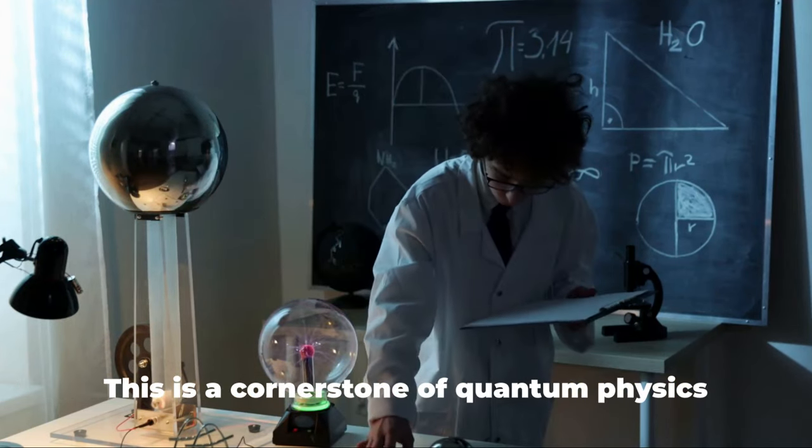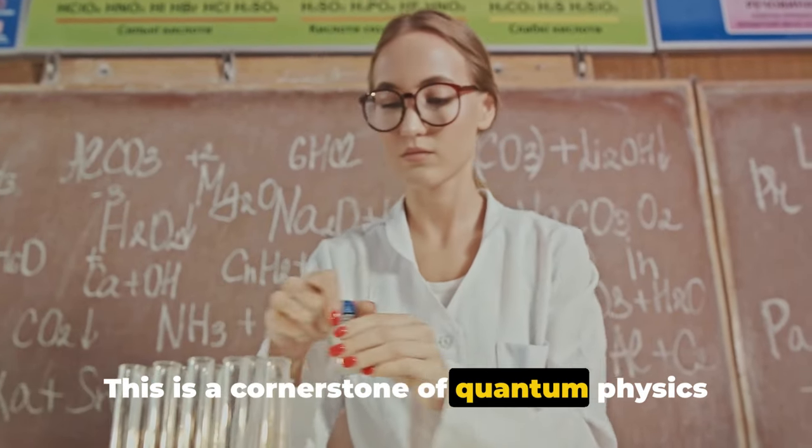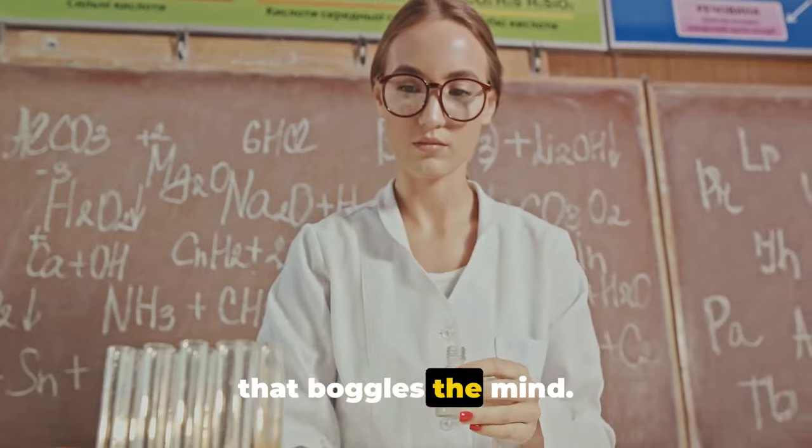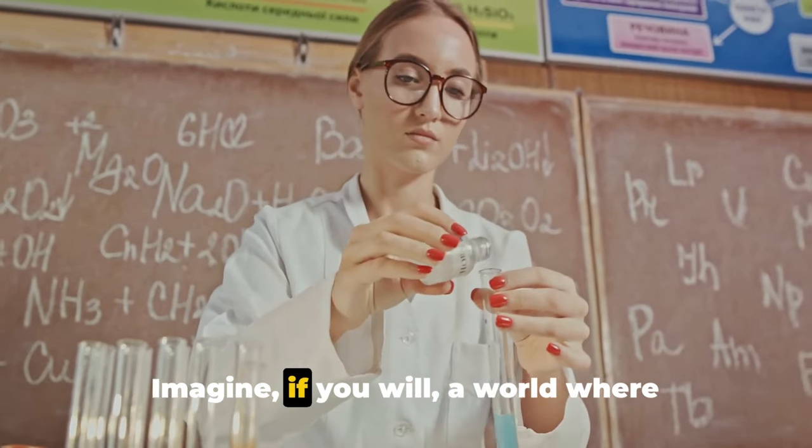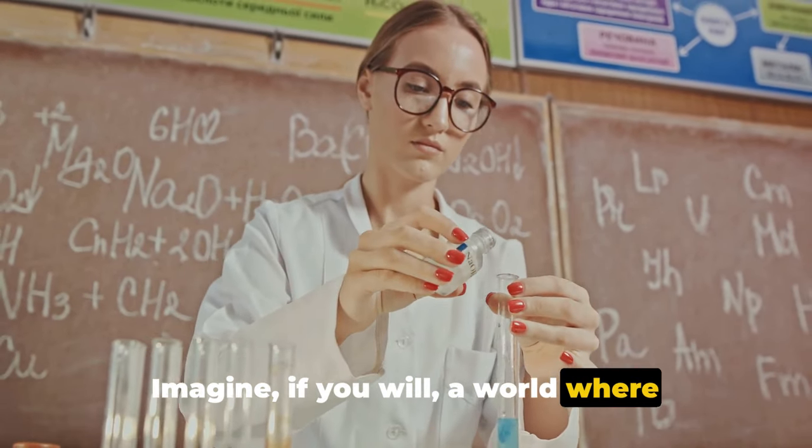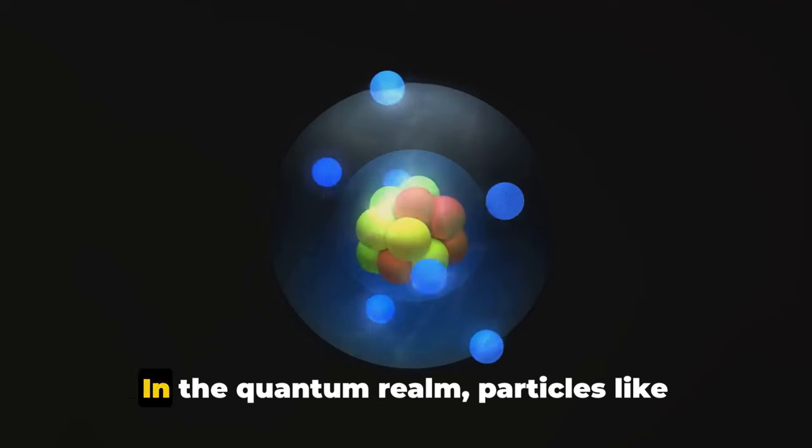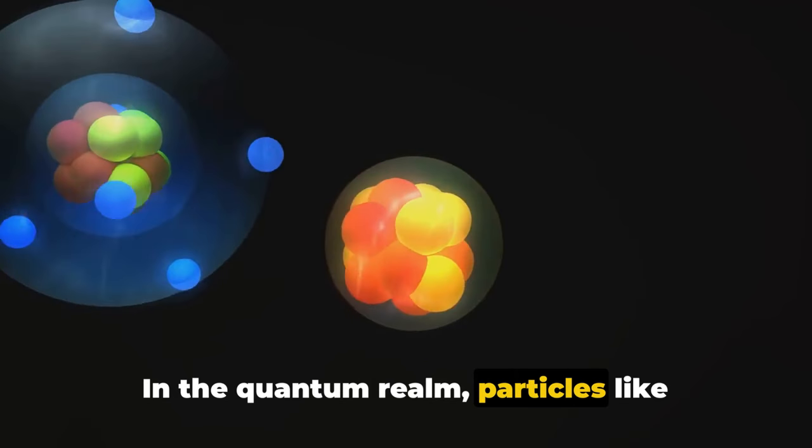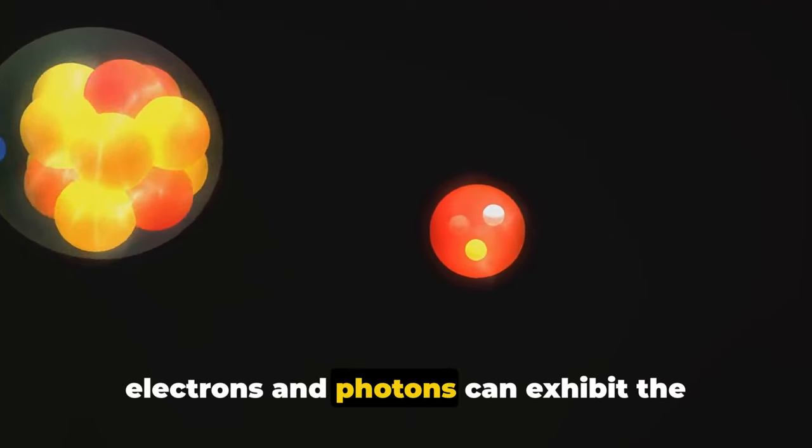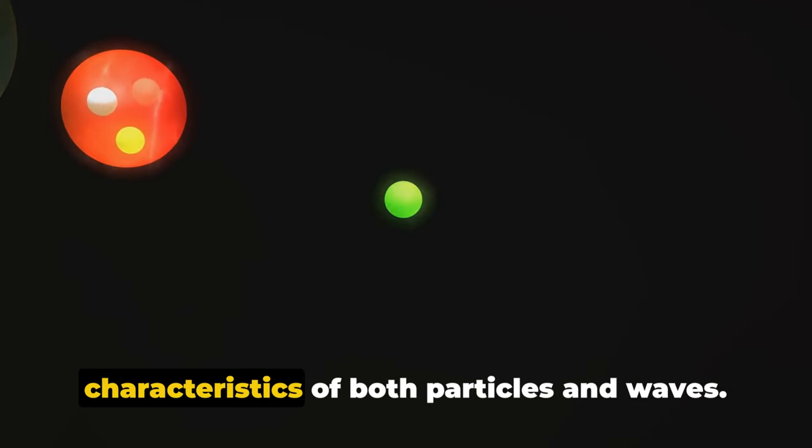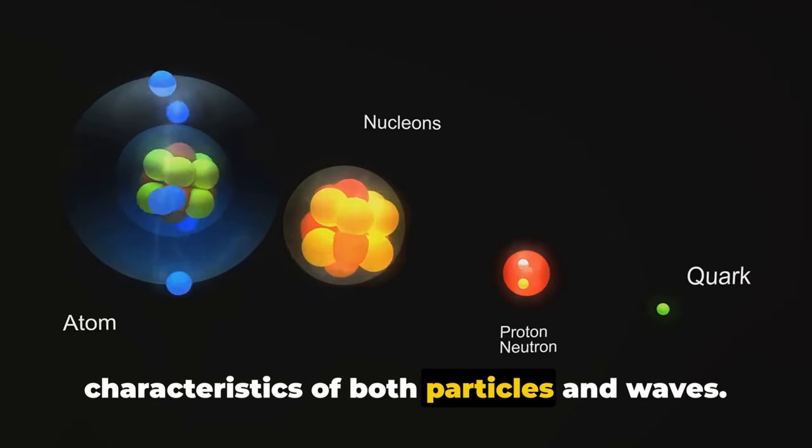Coming up at number seven, wave-particle duality. This is a cornerstone of quantum physics that boggles the mind. Imagine, if you will, a world where something can be two things at once. In the quantum realm, particles like electrons and photons can exhibit the characteristics of both particles and waves.